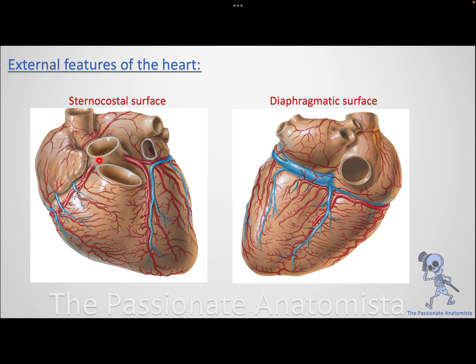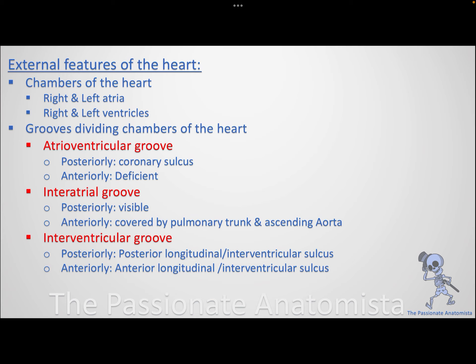As a recap for the external features: we have two atria — right atrium and left atrium — making the base of the heart, and two ventricles — right ventricle and left ventricle — visible from the posterior aspect. This concludes the summary of the external features of the heart.